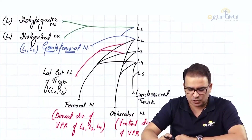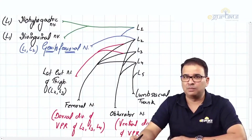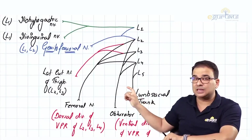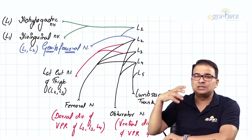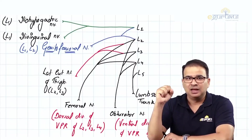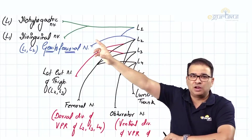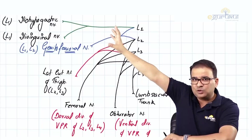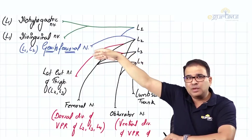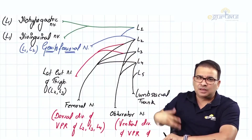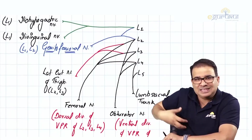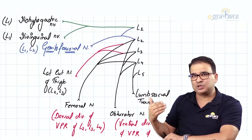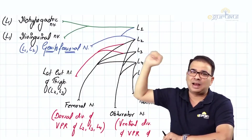So these are the major root values for the nerves coming out of the lumbar plexus. This lumbar plexus will also be of immense help when we discuss the relations of the kidney in the abdomen — the iliohypogastric, ilioinguinal, genitofemoral, and lateral cutaneous nerve of the thigh all form the posterior relations of the kidney, since the kidney is present in the lumbar region and these nerves are also coming from the lumbar region.